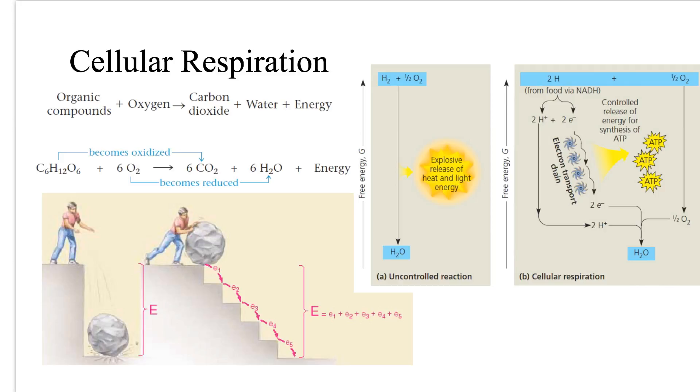So cellular respiration does not oxidize glucose in a single explosive step. Rather, glucose and other organic fuels are broken down in a series of steps, each one catalyzed by an enzyme. At key steps, electrons are stripped from the glucose, as is often the case in oxidation reactions, and each electron travels with a proton.